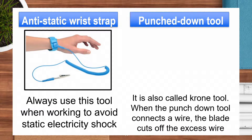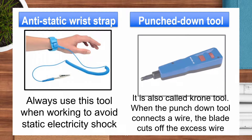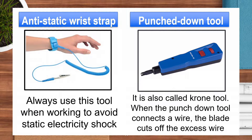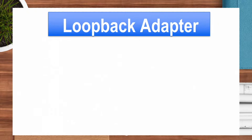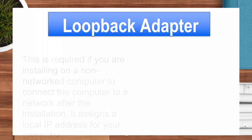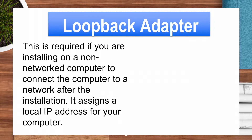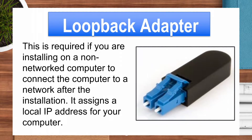Punch-down tool, also called a crown tool. When the punch-down tool connects a wire, the blade cuts off the excess wire. Loop-back adapter. This is required if you are installing on a non-network computer to connect the computer to a network after installation. It assigns a local IP address for your computer.